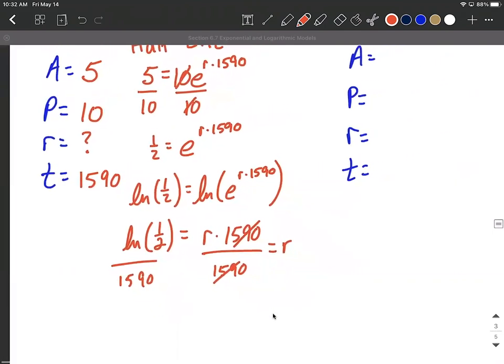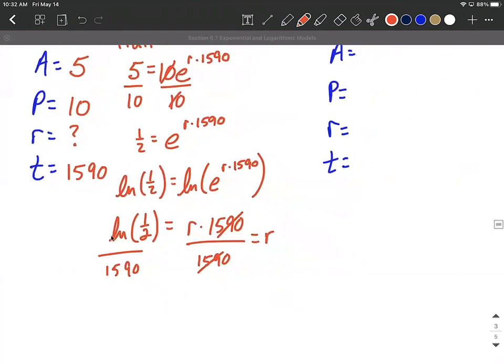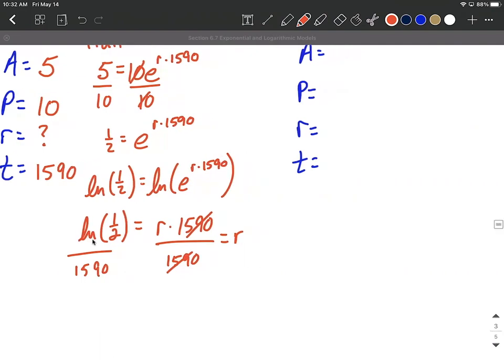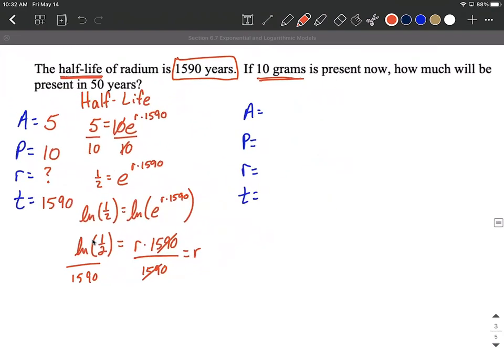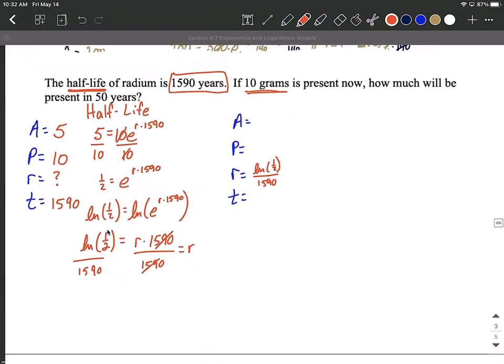And I know it's tempting to get a decimal approximation. If we did put this into our calculator, we would get a negative number. But for our purposes, we kind of like exact answers as much as possible. So try to avoid getting a decimal approximation for this. Instead, to answer a follow-up question, let's use that for our rate. So natural log of one half divided by 1590. I'm going to fill in for my rate.